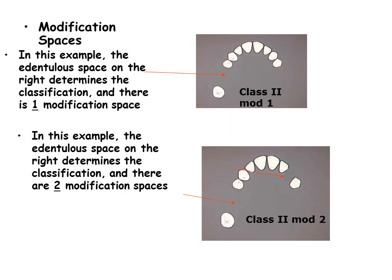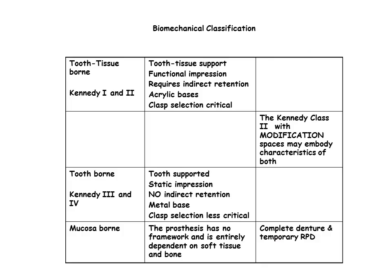Please observe the following examples. The biomechanical classification is described. It is useful to classify partial dentures and simplifies design of the RPD. The tooth-tissue type of partial shares common requirements for impression techniques, clasp selection, and denture-base support. The all-tooth-borne partial dentures also have features in common. Please be familiar with these various common shared characteristics as described in the table.